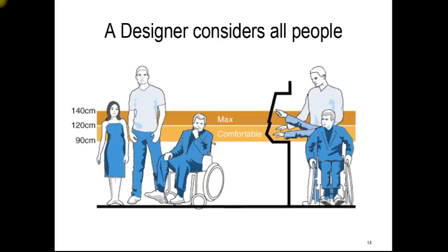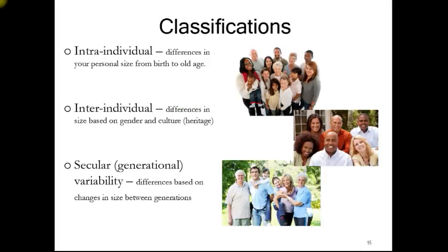A designer wants to consider all people. You can see the maximum comfortable range takes care of people in a wheelchair, a very tall person, a shorter woman, and a variety of people. Intra-individual variability also matters: when you're a child you may start at 21 inches but end up at 71 inches — a growth of 50 inches over a lifetime. Our needs change over our own lifetime.